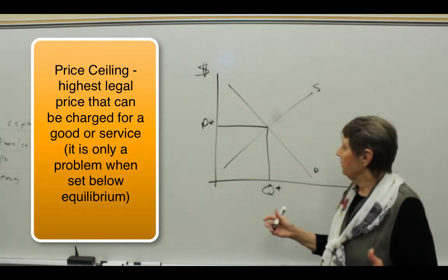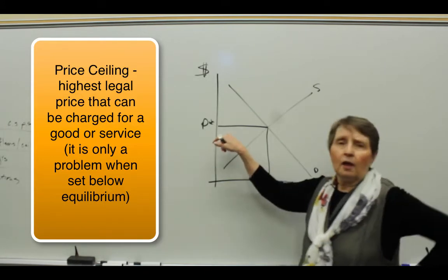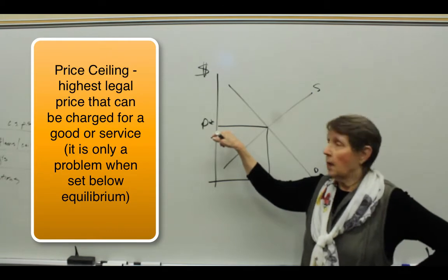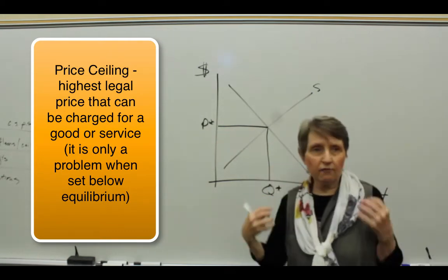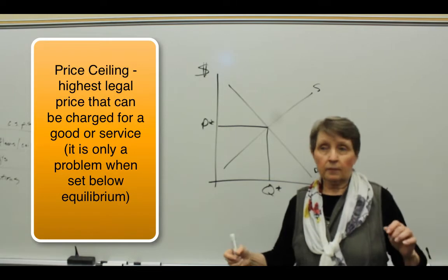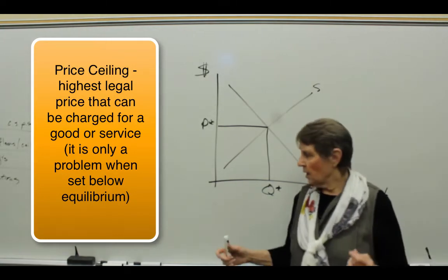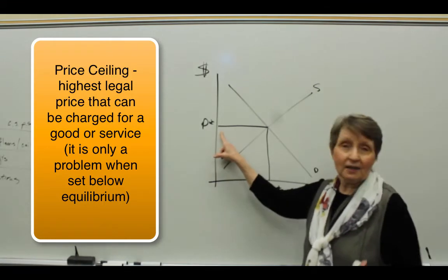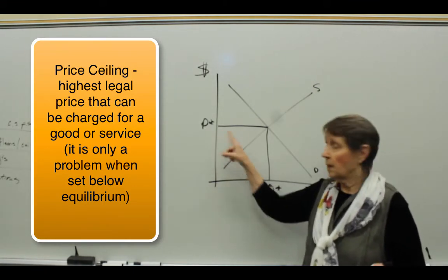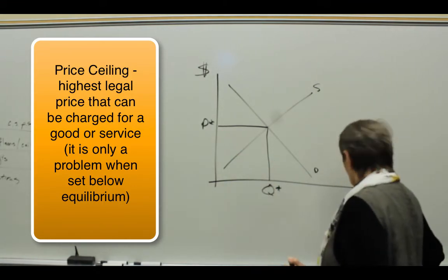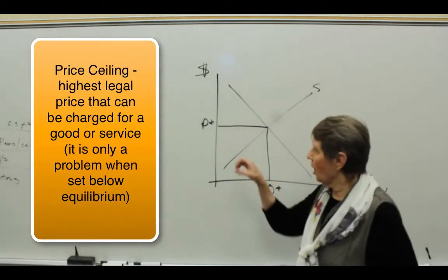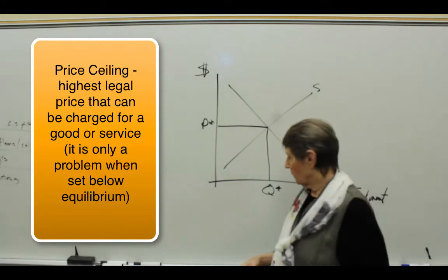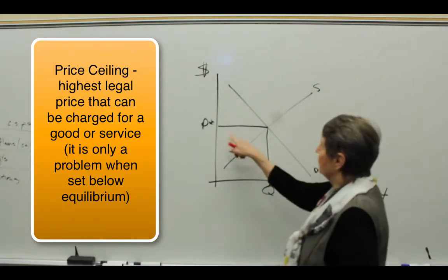Sometimes the government will look at a situation like this and say, 'There's a lot of people that can't afford this price. This is too high.' So what we, the government, are going to do - a lot of cities do this - local governments will say, in an attempt to help people who cannot afford this price, we are going to put a ceiling on the price that apartment owners can charge to rent their apartments.